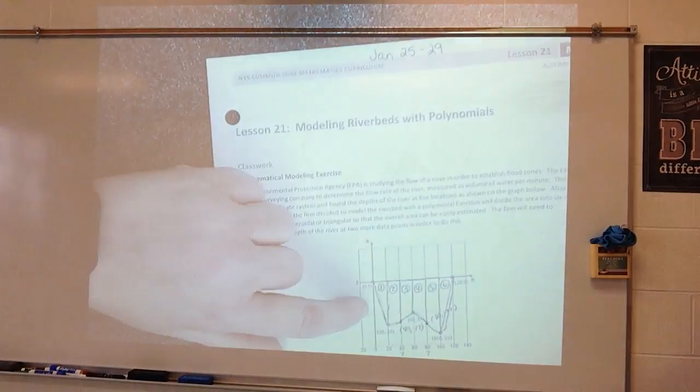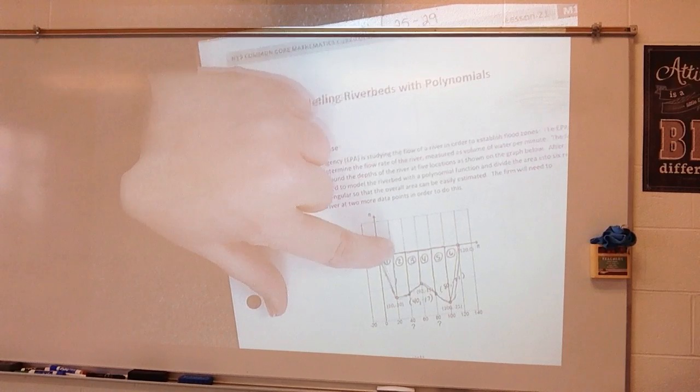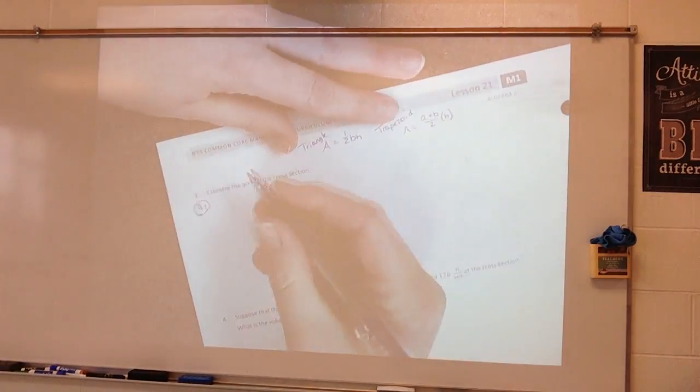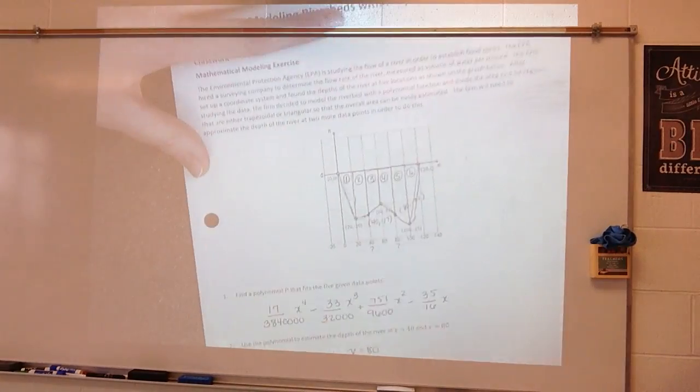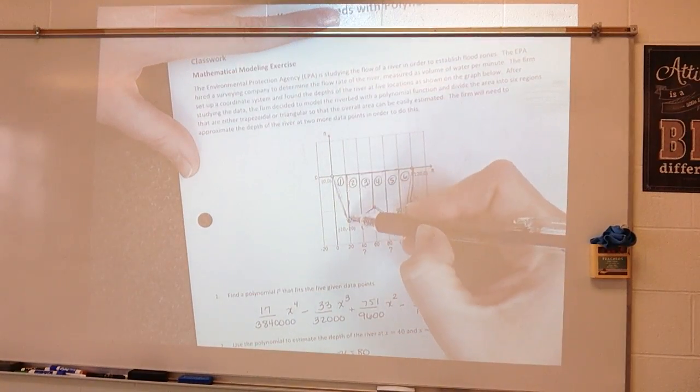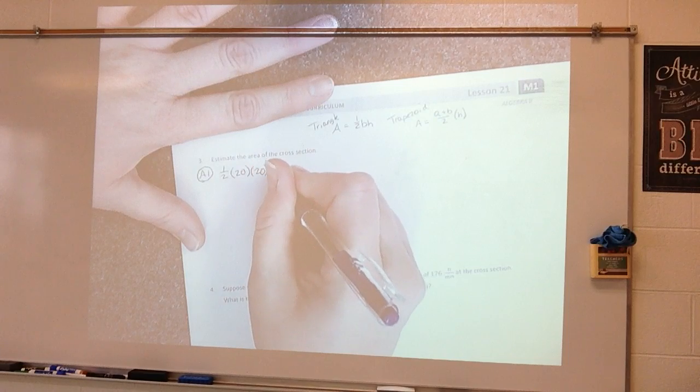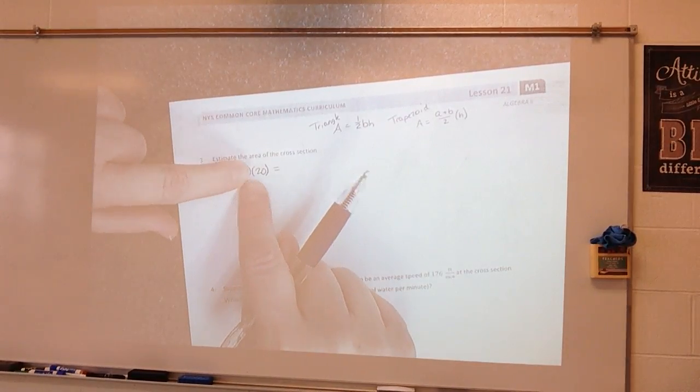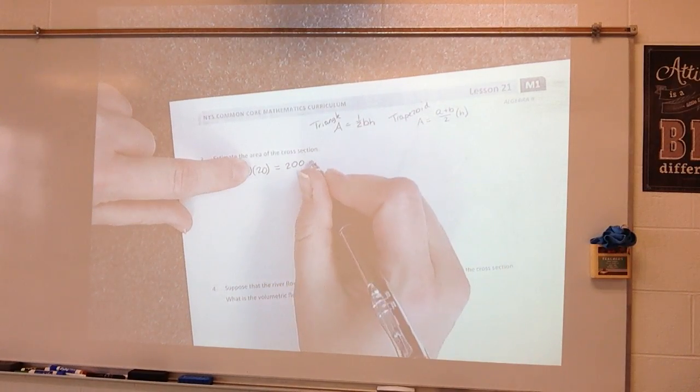So the area of the first figure, the first figure is a triangle. So my base would be from 0 to 20. So my base is 20. So 1 half times 20. And then I find my height by whatever this is. And that is 20. And so I'm going to figure this out. So 1 half of 20 is 10. 10 times 20 is 200. So it's 200 square feet.